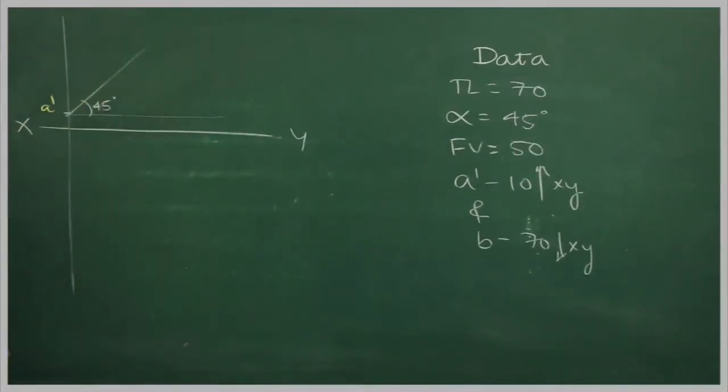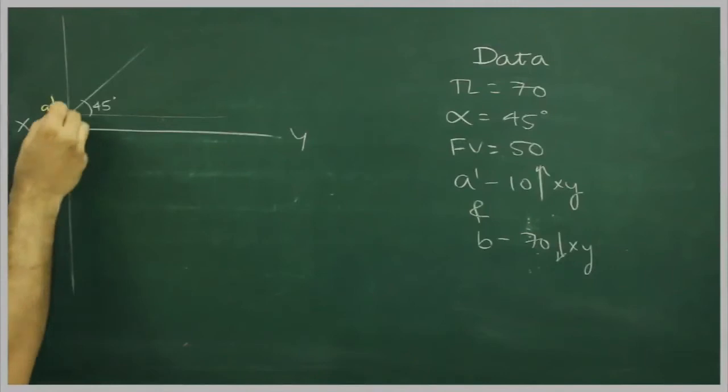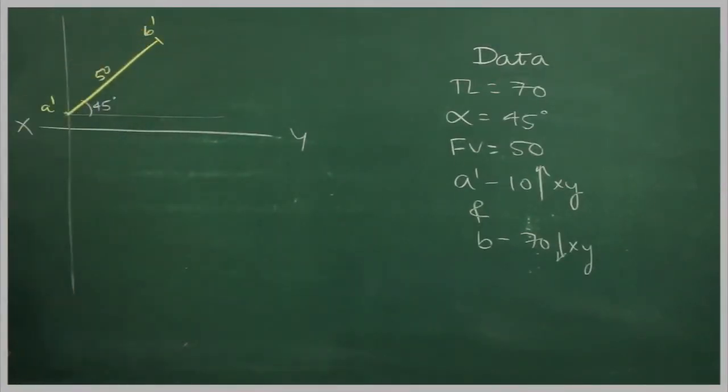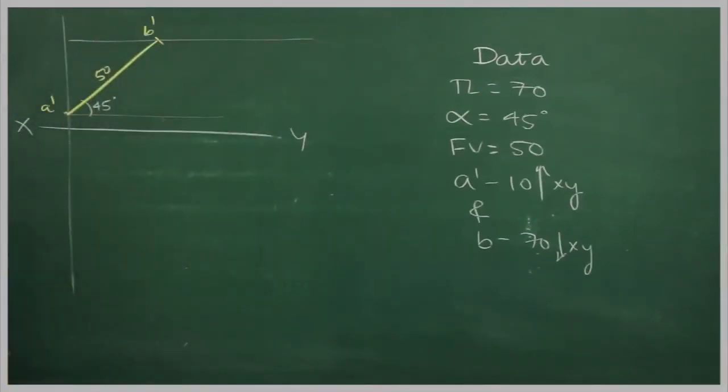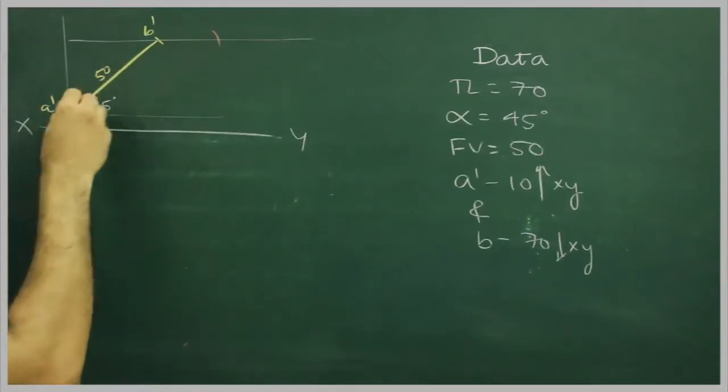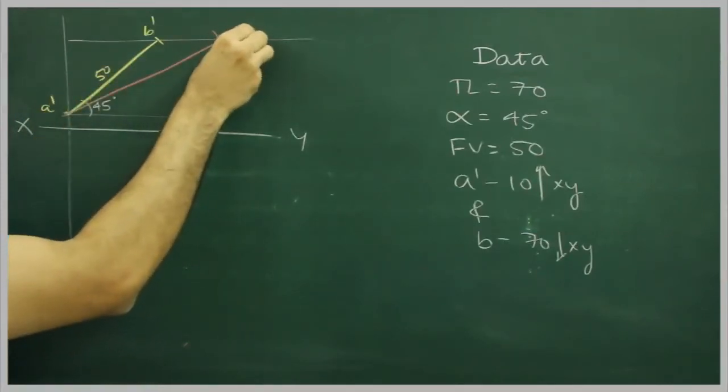On that we can mark front view, it is given 50, so B dash. Then we can draw horizontal line and we can mark true length as well, that is B1 dash.